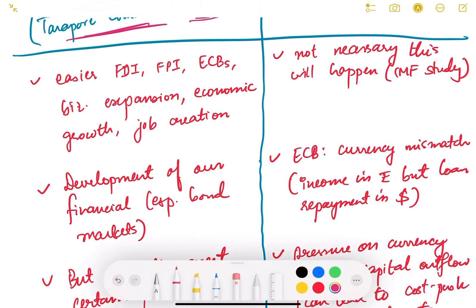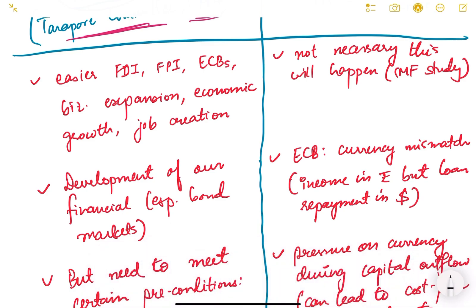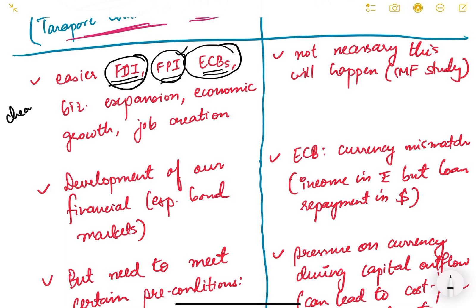The first argument the Tarapur Committee made in favor of capital account liberalization was that FDI would become easier, since there are no restrictions on capital flows. It would attract more FDI and more FPI — foreign portfolio investments. Indian borrowers would also be able to take more external commercial borrowings, which offer cheaper loans to Indian companies and manufacturers, enabling business expansion.